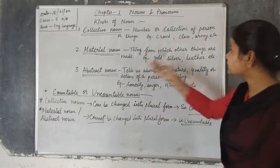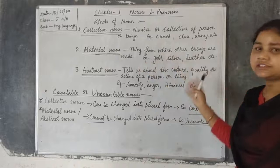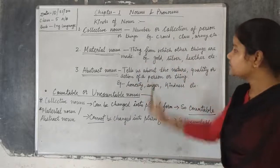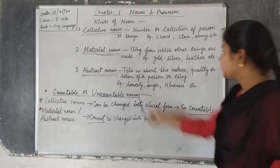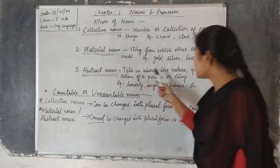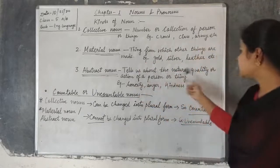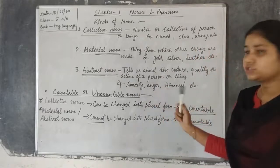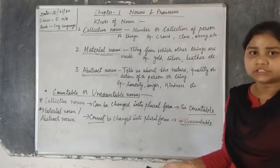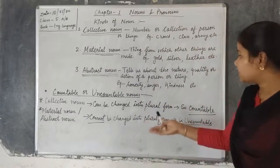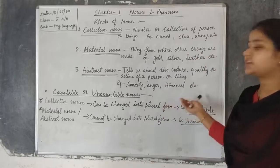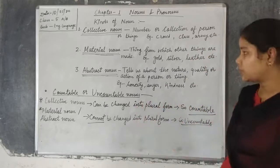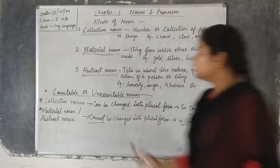The third one is abstract noun, which tells us about the nature, quality, or action of a person or thing — meaning what type of person it is. Honesty, anger, and kindness are examples of abstract noun.